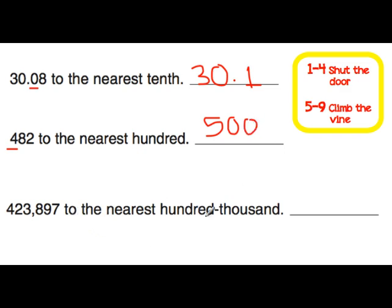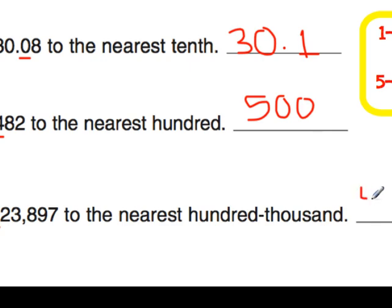Lastly, we're rounding to the nearest hundred thousand. Let's sing our song: 1s, tens, hundreds, comma, thousands, ten thousands, hundred thousands. So we're going to underline that 4. To the right of our 4 is a 2 — that fits our rule 1 through 4, shut the door. So we're going to leave that a 4, and everything after is going to turn to zeros. Our answer is 400,000.